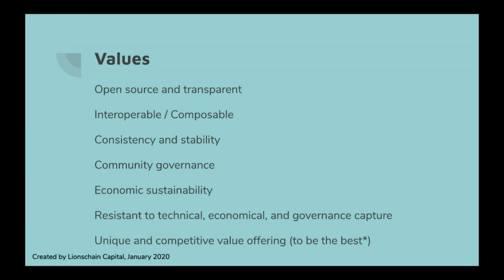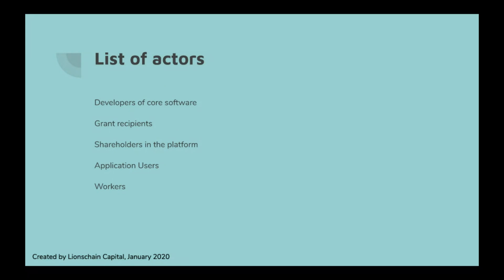Before getting into the model itself, it's important to look at the list of actors. In most cases you're going to have: developers of the core software who are actually building your application; grant recipients who receive one-off payments for tasks like wallet integrations or scalability features; shareholders who invested in your application, sometimes before you even built anything; application users who are using the platform to benefit from it; and workers who are a group of people enabling your application to provide value to the users.